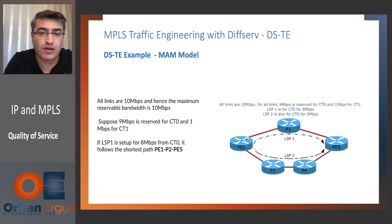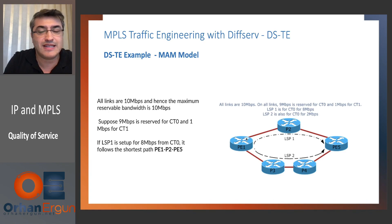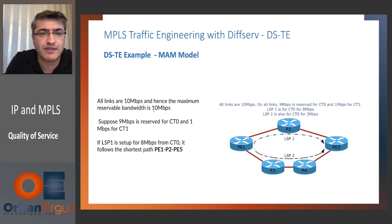Now what we will do is put even more granularity. We will use CT — class type — for voice and similar traffic types. All links are 10 MB, and that's why the maximum reservable bandwidth is 10 MB.